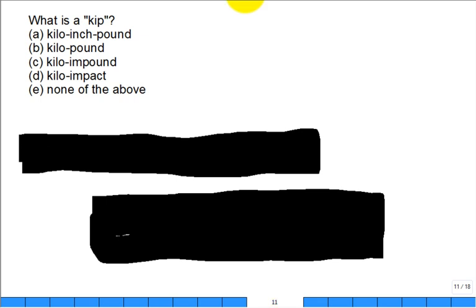All right, you're reading along and they say okay the answer is 10 KIP. What? So what is a KIP, pronounced kip? What's a kip? Is it a kilo inch pound, a kilo pound, kilo impound, a kilo impact, or none of the above? It's a kilo pound, and oh by the way, guess what, there's going to be a KSI in your next class.